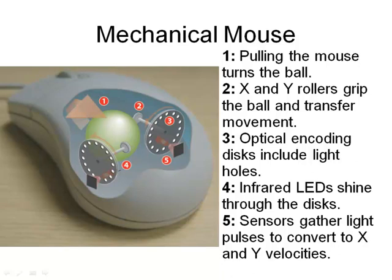The mechanical mouse isn't seen much nowadays. It used a ball in the middle: moving the mouse would rotate the ball, which rotated disks inside. Those disks had a light encoding — holes and a light sensor — that picked up the rotations to work out the X and Y velocity of the mouse.